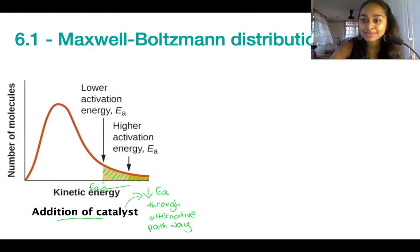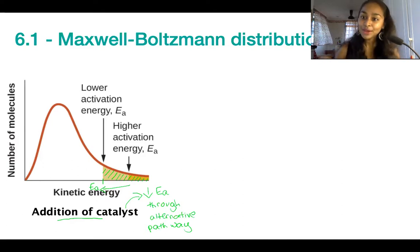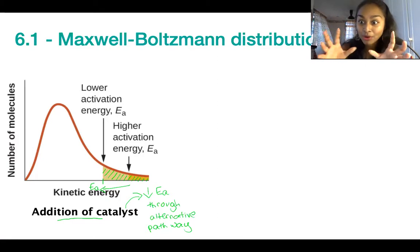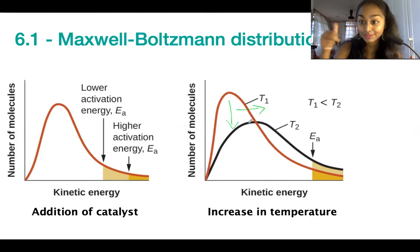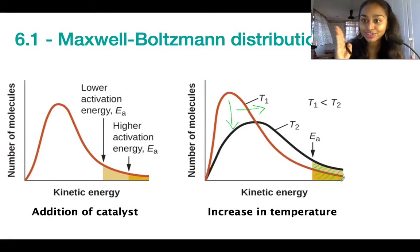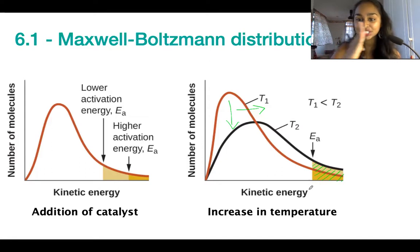The next condition is an increase in temperature and how that changes our Maxwell-Boltzmann distribution. With an increase in temperature, particles increase in kinetic energy. The curve shifts to the right — the peak shifts right — and the curve also flattens. This means more particles now have sufficient energy to overcome the activation energy barrier. The activation energy barrier itself hasn't changed, but the particles have increased in energy to get past that threshold.